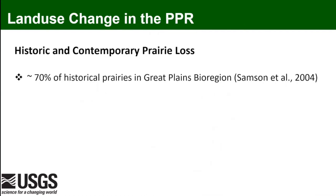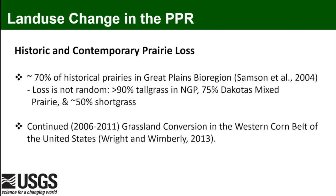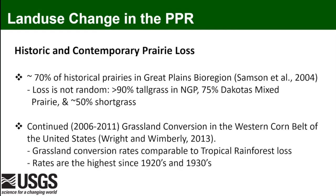Regarding historic and contemporary prairie loss: 70% of historical prairies in the Great Plains have been converted primarily to cropland. Importantly, that loss is not random in space or time. Of the grassland biomes, about 90% of tall grass in the northern Great Plains has been lost, 75% of the Dakotas' mixed prairie, and 50% of short grass. Unlike wetlands, this loss continues to the present day — grassland conversion in the western Corn Belt is occurring at rates comparable to tropical rainforest loss in South America, at the highest rate since the 1920s and 30s.